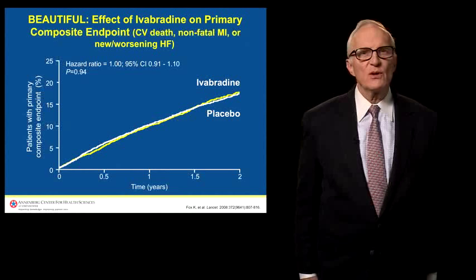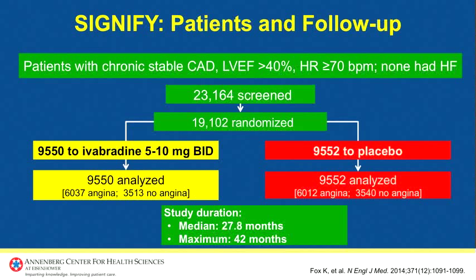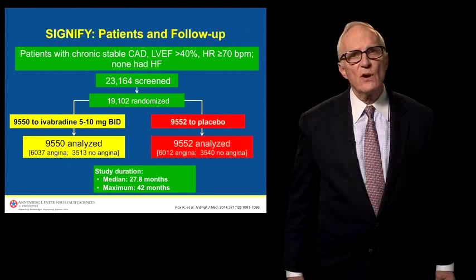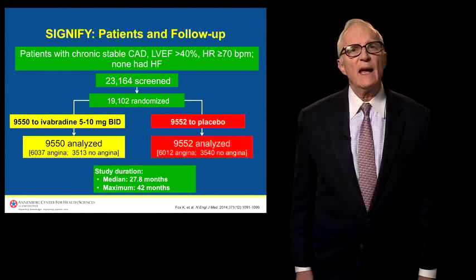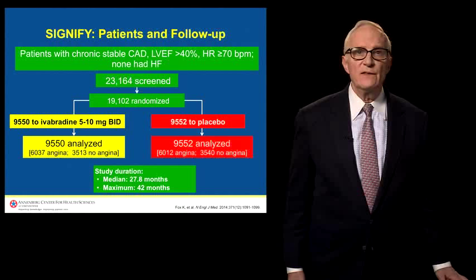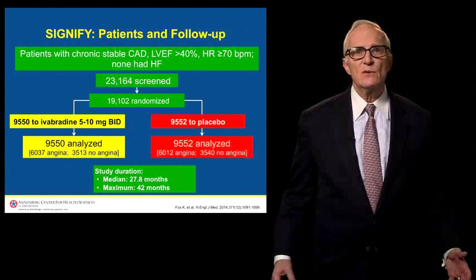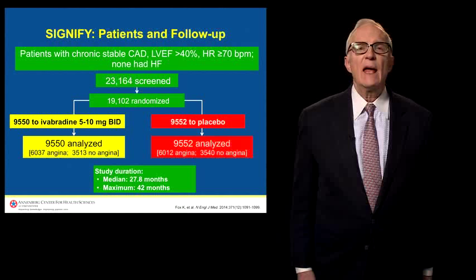Because the results were unclear, another trial was developed called SIGNIFY. SIGNIFY involved 19,000 randomized patients, half to Ivabradine — at a slightly higher dose, up to 10 mg twice daily — and half to placebo. The median study duration was about two and a half years, maximum just over three and a half years. Unfortunately, here too there was no benefit. Importantly, patients in SIGNIFY had to have an ejection fraction of at least 40% — no left ventricular systolic dysfunction, no heart failure — these were pure chronic stable coronary artery disease patients — and yet there was no impact at all of heart rate slowing.